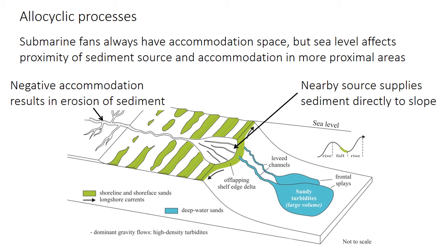Allocyclic processes are typically very important in fan environments, but submarine fan sedimentation can also be affected by sea level changes somewhat indirectly. There is always accommodation space in the submarine fan. When sea level is low, the sediment source — like the river mouth — is very close to the shelf edge, dumping lots of sediment directly into the fan. The fan will receive more sediment, become coarser-grained, and may prograde outwards.